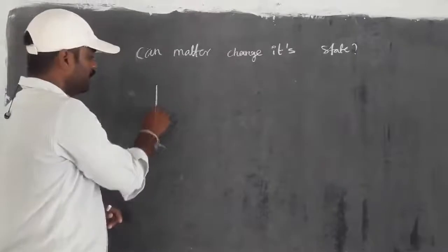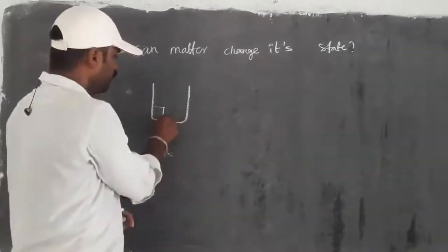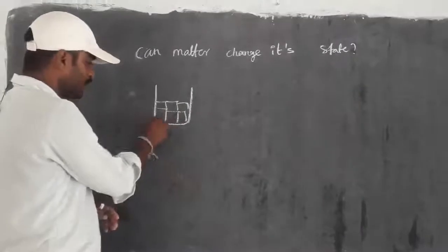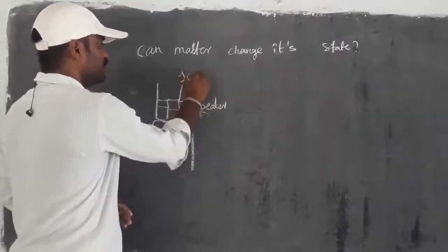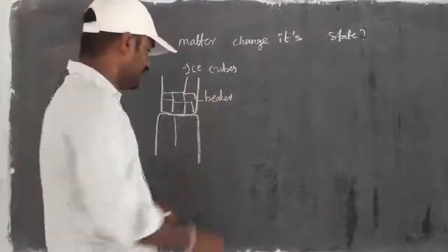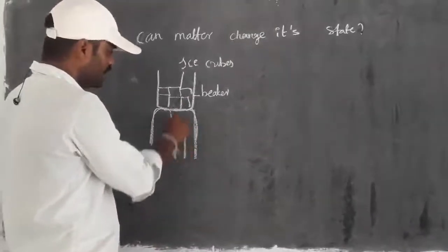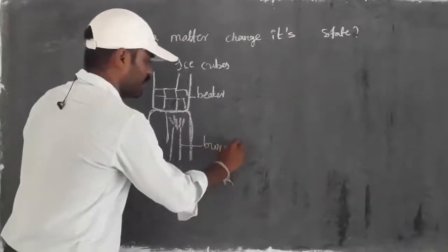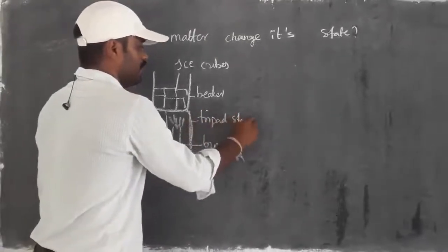Here I am taking a beaker. Take one beaker, and we have to fill it with ice cubes. The ice cube beaker we have to place on the stand. This is the beaker, this is ice cubes, and this is the tripod stand — it is having three legs. Below it, we should arrange the gas burner.